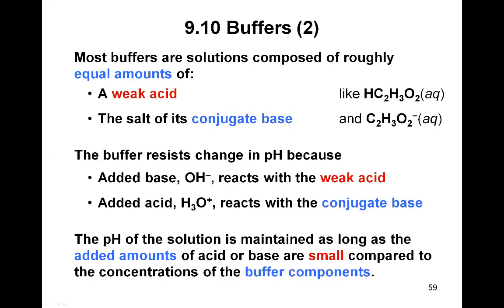For example, if you're making a buffer with acetic acid — HC2H3O2, which is a weak acid — you would have a high concentration of acetic acid and you would add the salt of its conjugate base. The conjugate base of acetic acid is the acetate ion, and the salt of its conjugate base would be sodium acetate, lithium acetate, or potassium acetate. These two — acetic acid and acetate ion — would be in large and roughly equal quantities in solution to make a buffer.